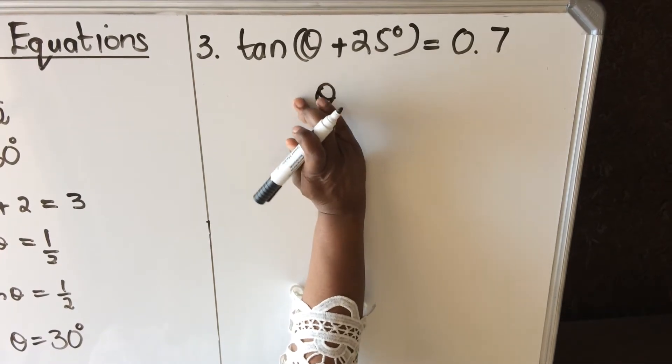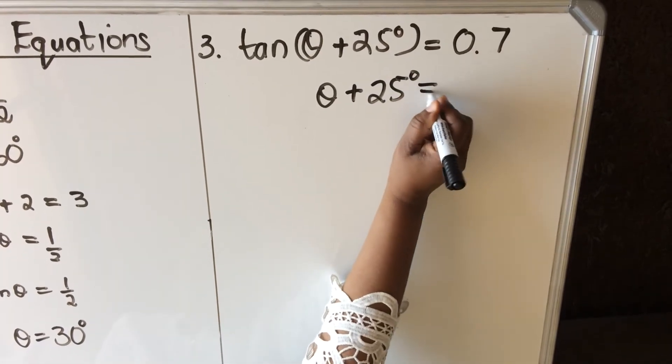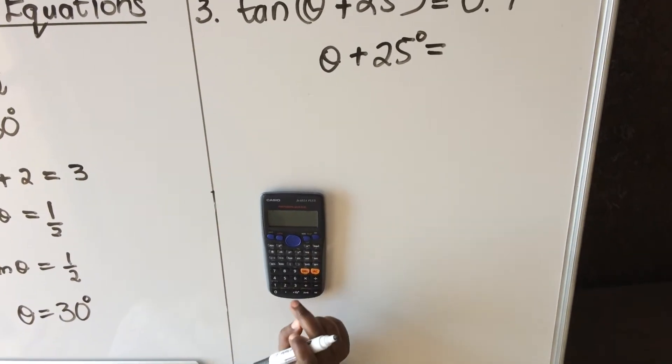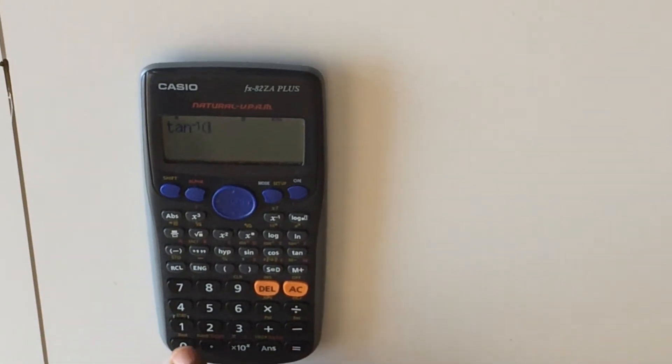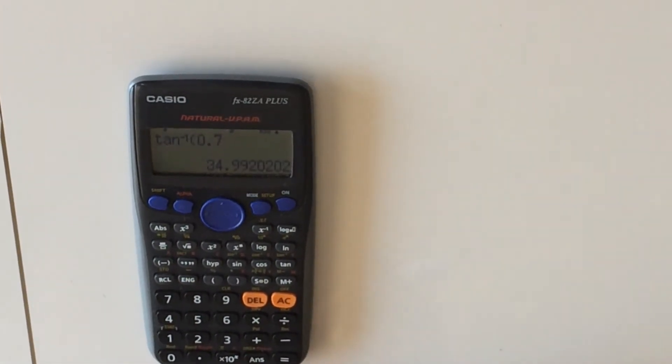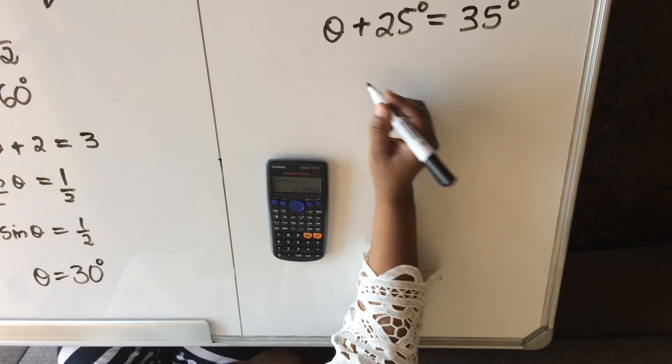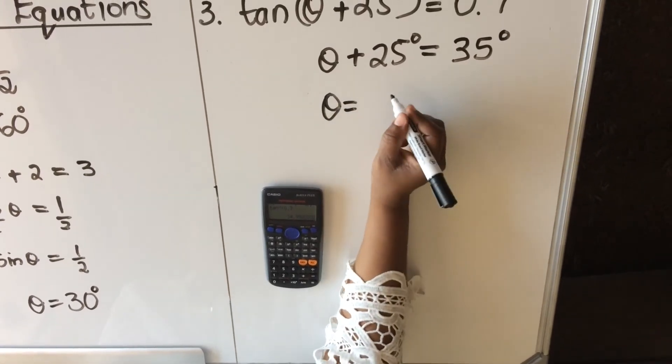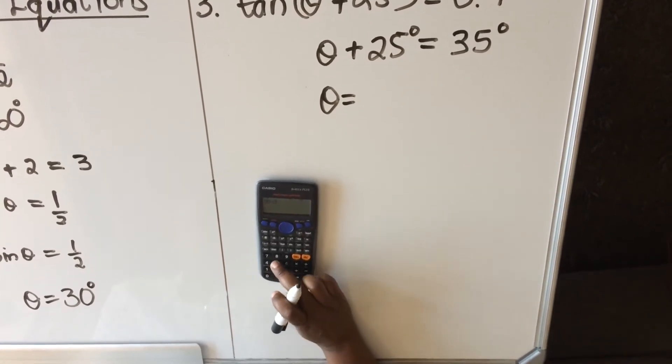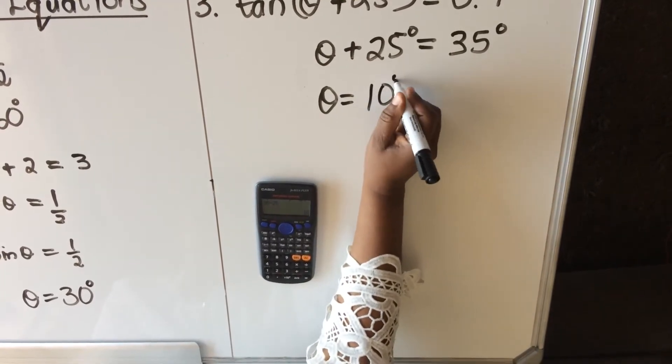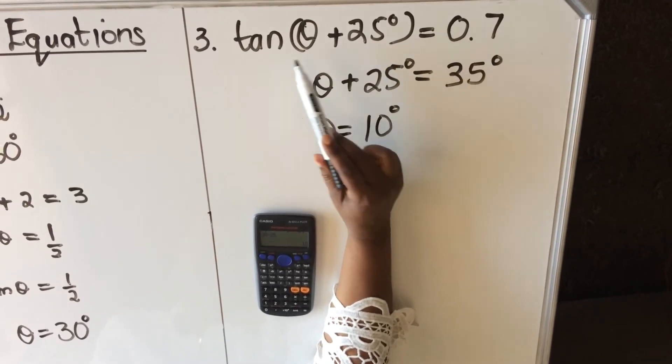This is what I mean: we need to get rid of the tan, so we're going to use our calculator to divide by tan on both sides. Then we are left with theta plus 25 degrees. You need to find the angle: shift tan 0.7. When you work it out, we get 35 degrees. So theta equals 35 minus 25, then your theta is 10 degrees.